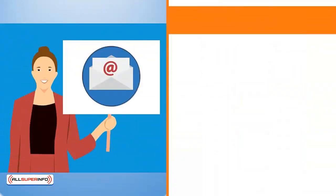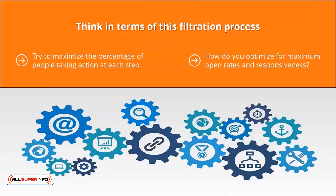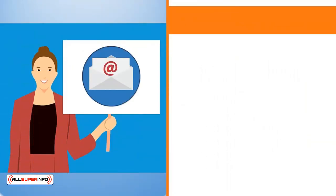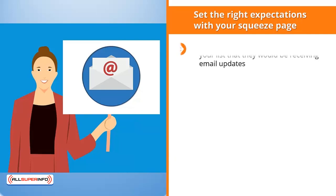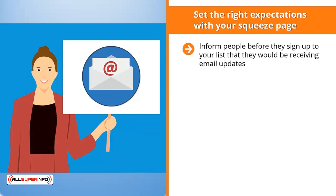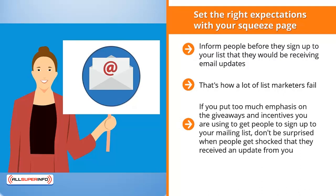How do you optimize for maximum open rates and responsiveness? First, you need to be clear about your target niche — your updates have to be targeted to the set of problems people in your niche have. Set the right expectations with your squeeze page: inform people before they sign up that they will be receiving email updates and clue them into the value those updates will bring to their lives. Don't just play up the incentive to get people to join your list — that's how a lot of list marketers fail.